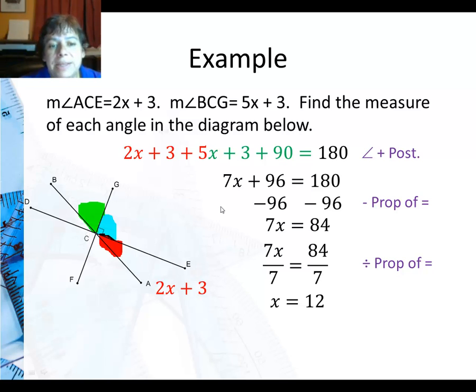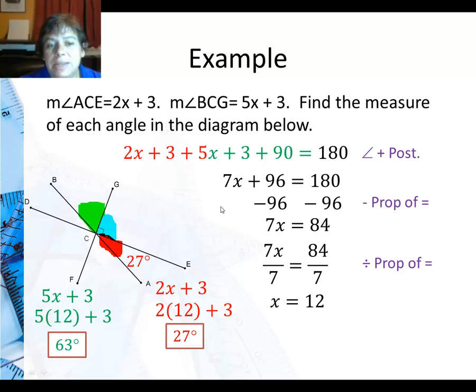Now I can go ahead and substitute back in for ACE putting in 12. And I get 27 degrees. I can also substitute in for BCG putting in 12 for x. And I get 63 degrees. I know that that's 90 degrees. And you're going to learn a little bit more about vertical angles, but you'll find out that the 90 is also across the way, and the 63 is opposite, and the 27. So those are the measures of all the angles in that picture.